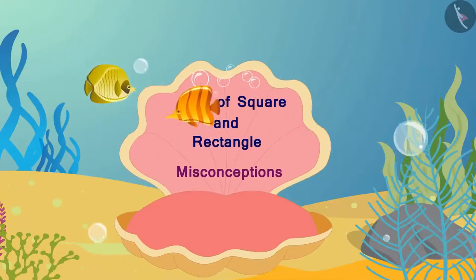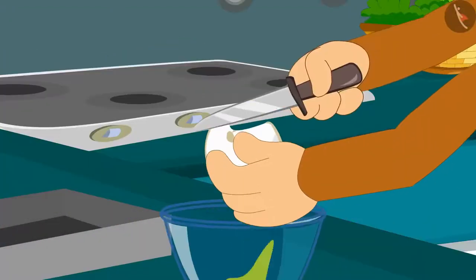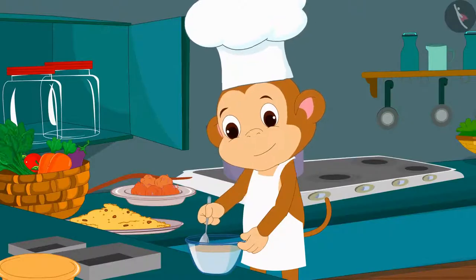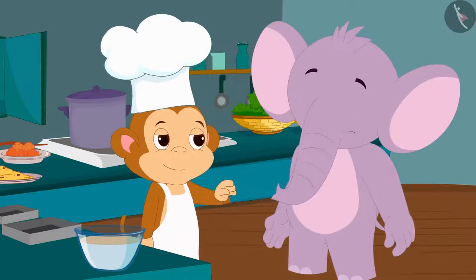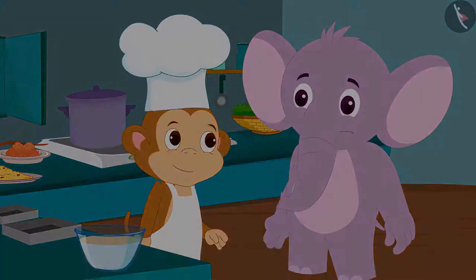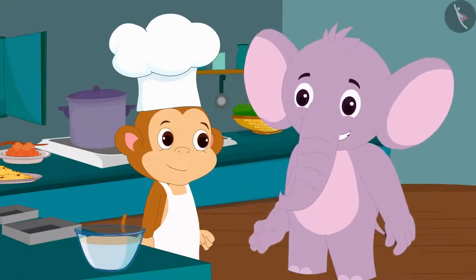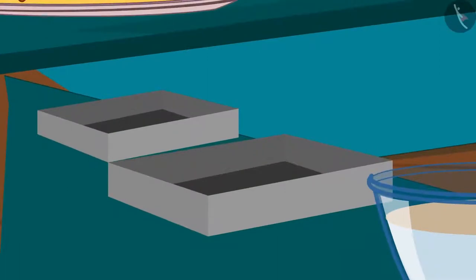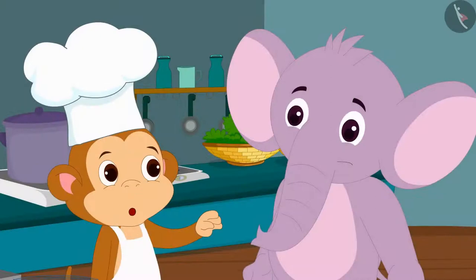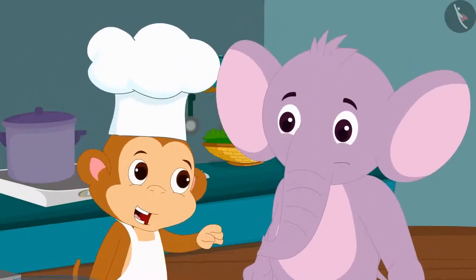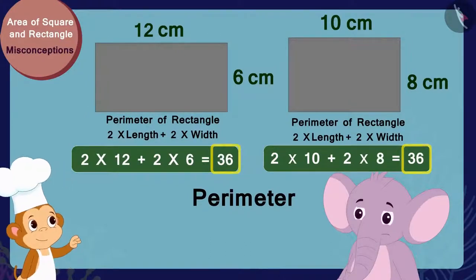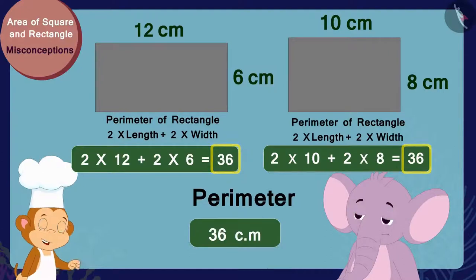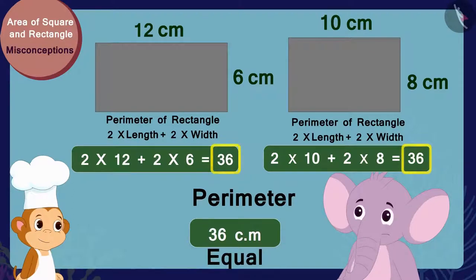Babban is preparing to bake a cake for Banno's birthday. Appu came to his house and asked why he was using the small tray instead of the big tray. Babban explained he had found the perimeter of both trays, and the perimeters of both trays are exactly the same — 36 centimeters — so he thought both trays were exactly the same.